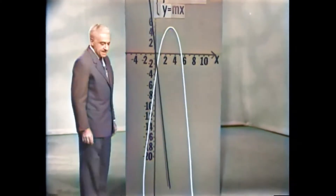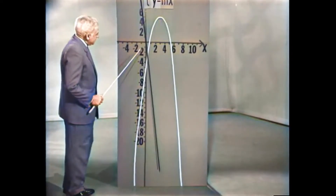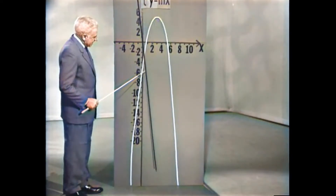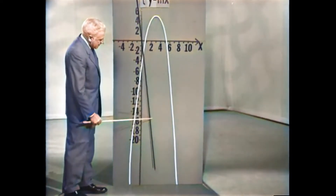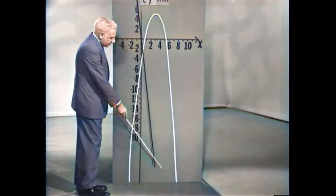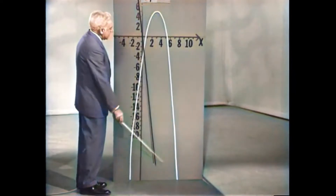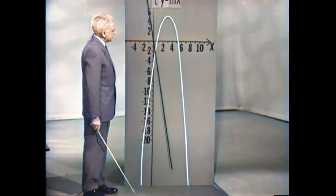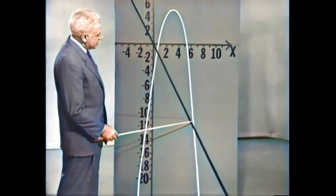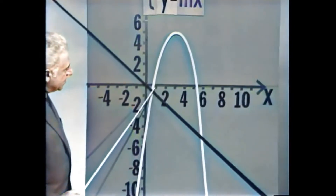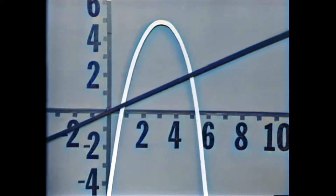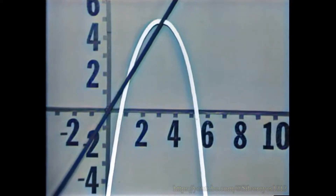הנה הישר כאשר השיפוע שלו שלילי — יש שתי נקודות חיתוך. נתחיל לסובב את הישר: כל הזמן יש שתי נקודות חיתוך, הנקודות הולכות ומתקרבות, עד שמגיעים ל-m שווה ל-2.